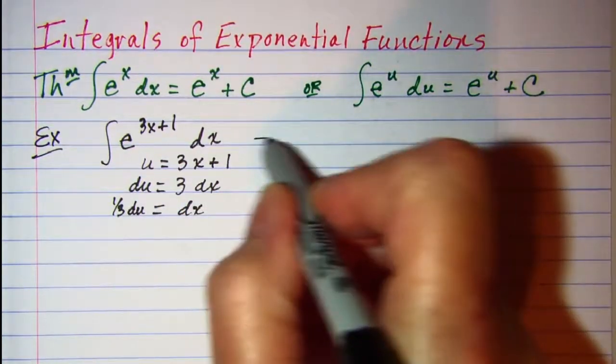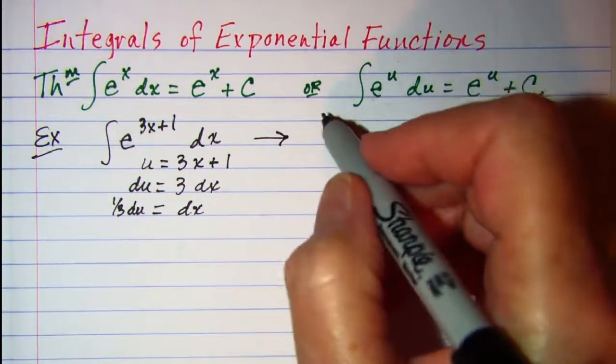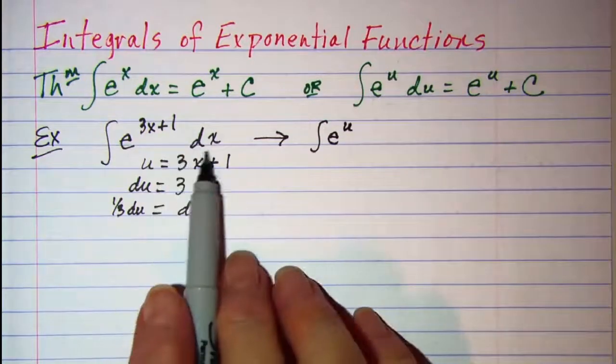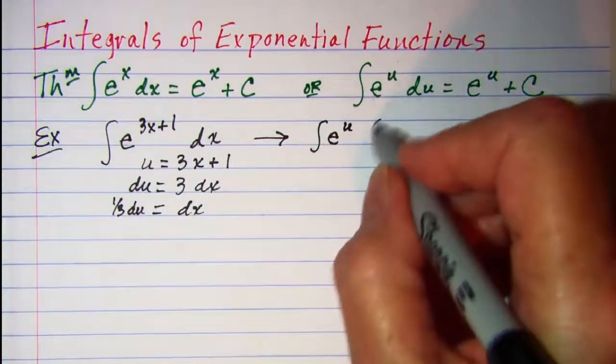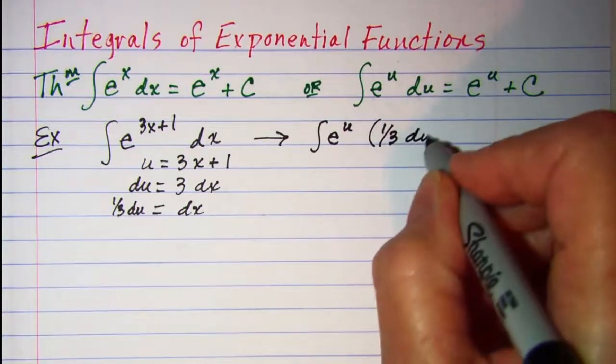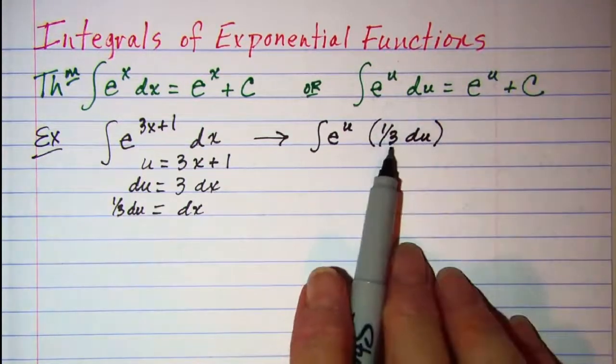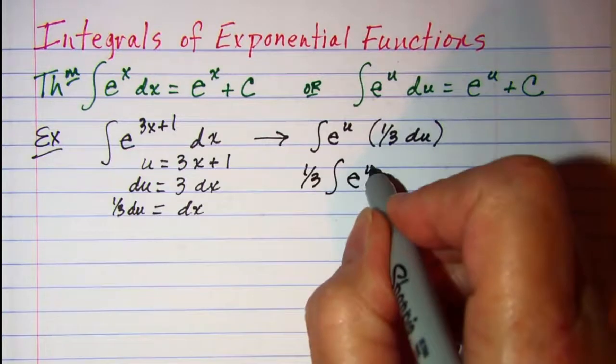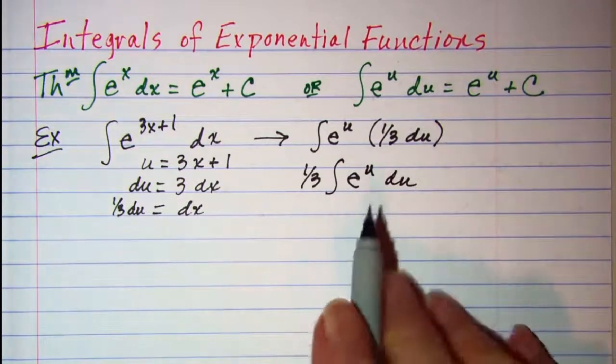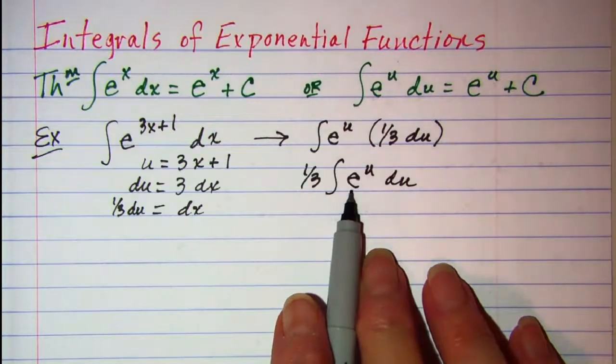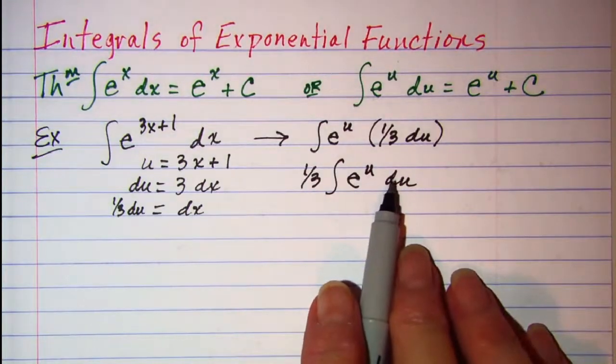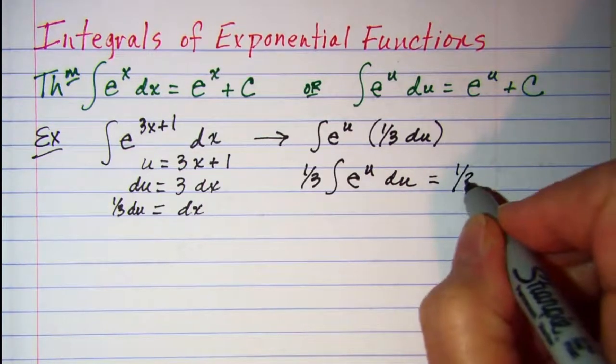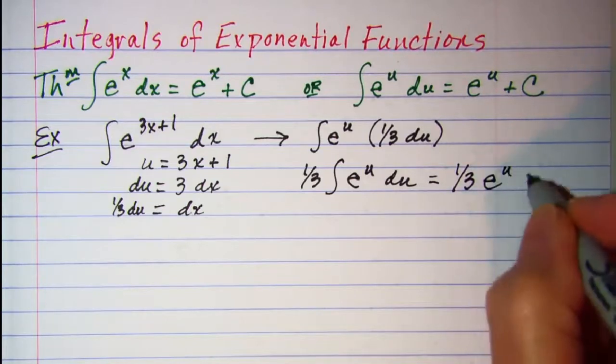My substitution then gives me the integral of e to the u, and then in place of dx I'll put 1 third du. I can bring my 1 third out in front of the integral, and we know that the integral of e to the u du is e to the u plus a constant. So this is 1 third e to the u plus a constant.